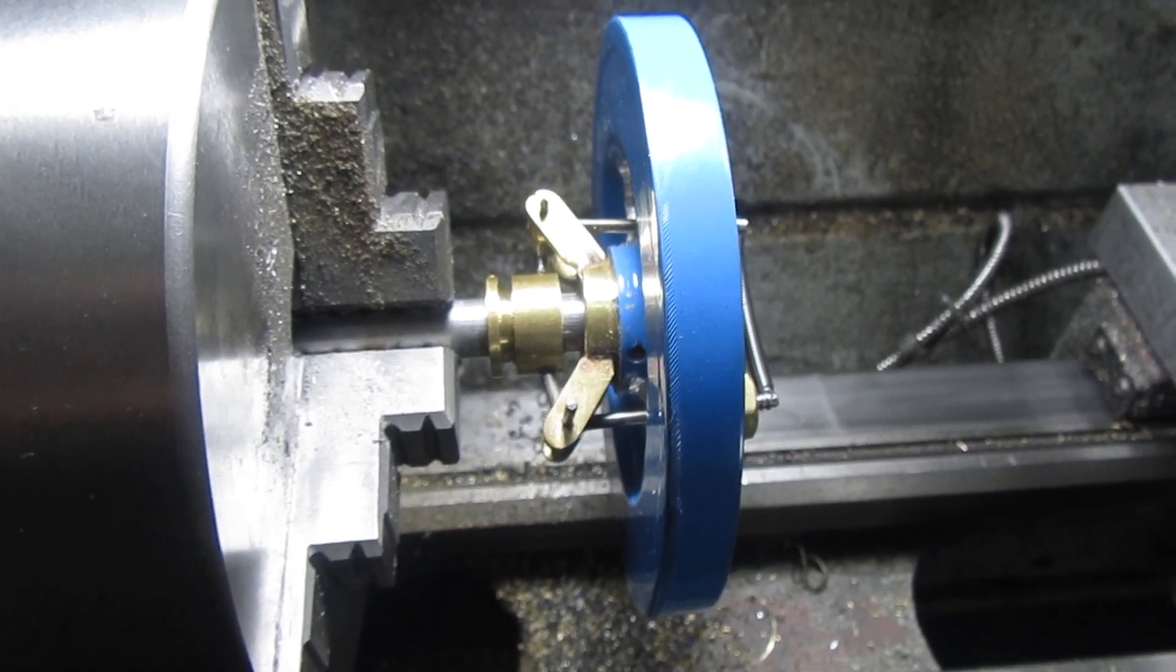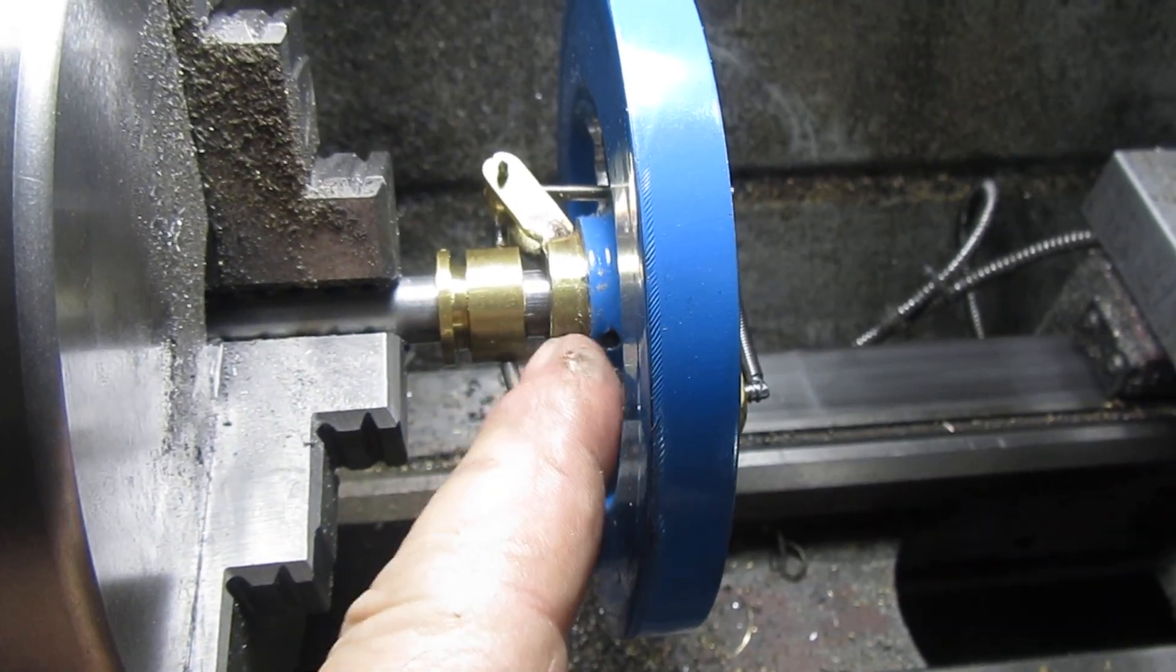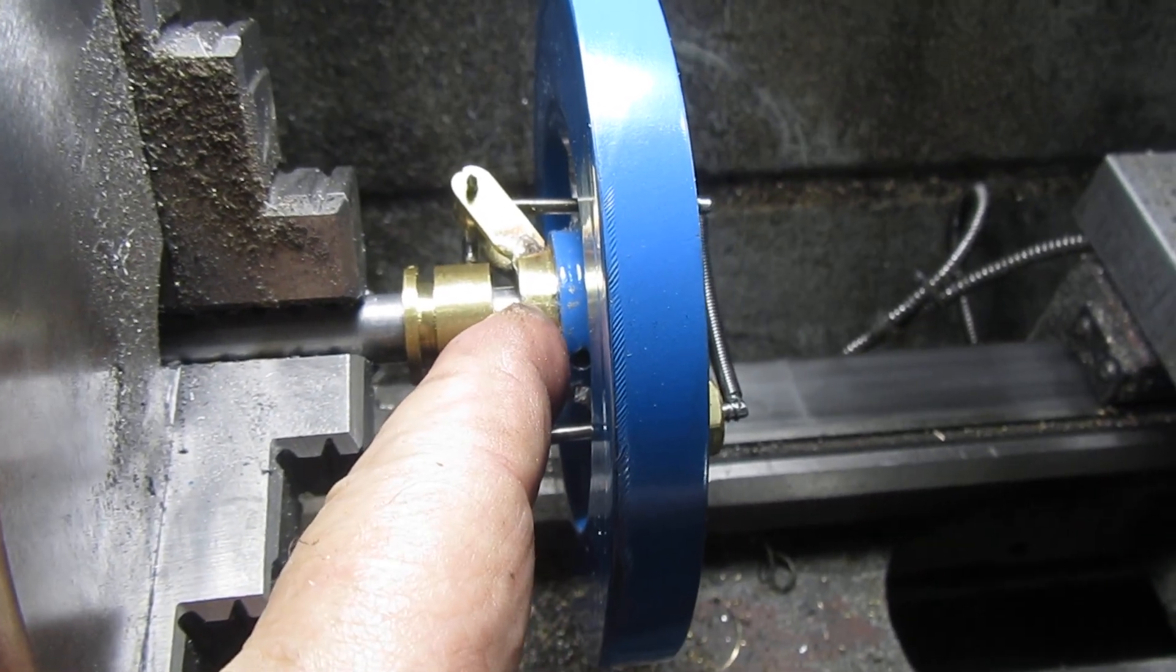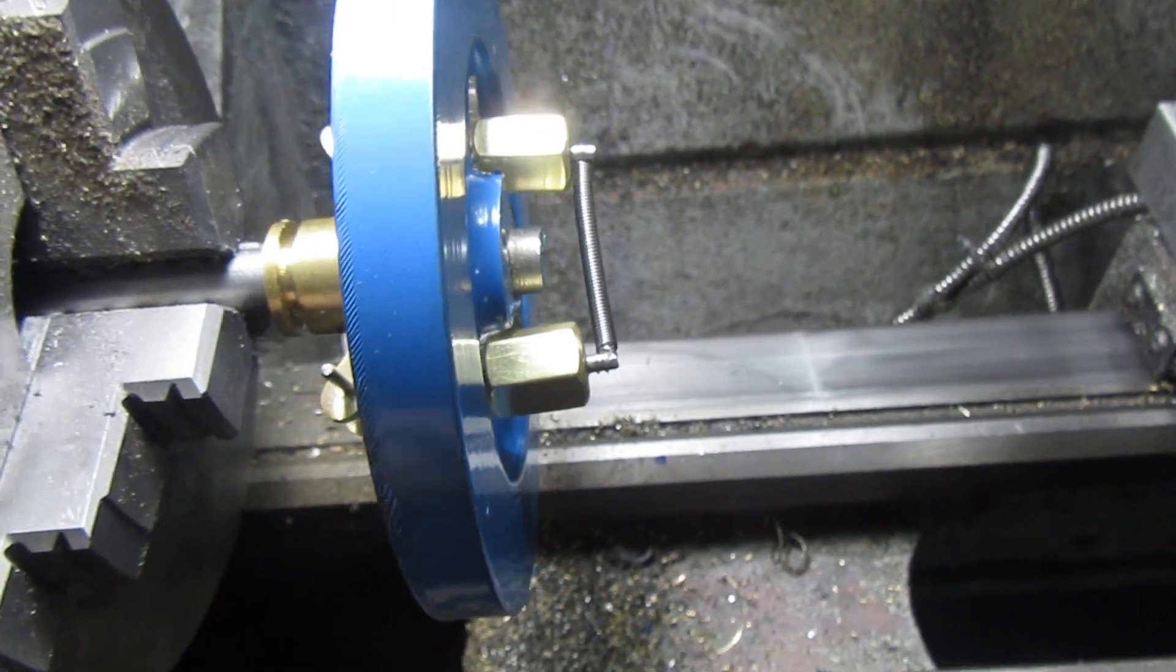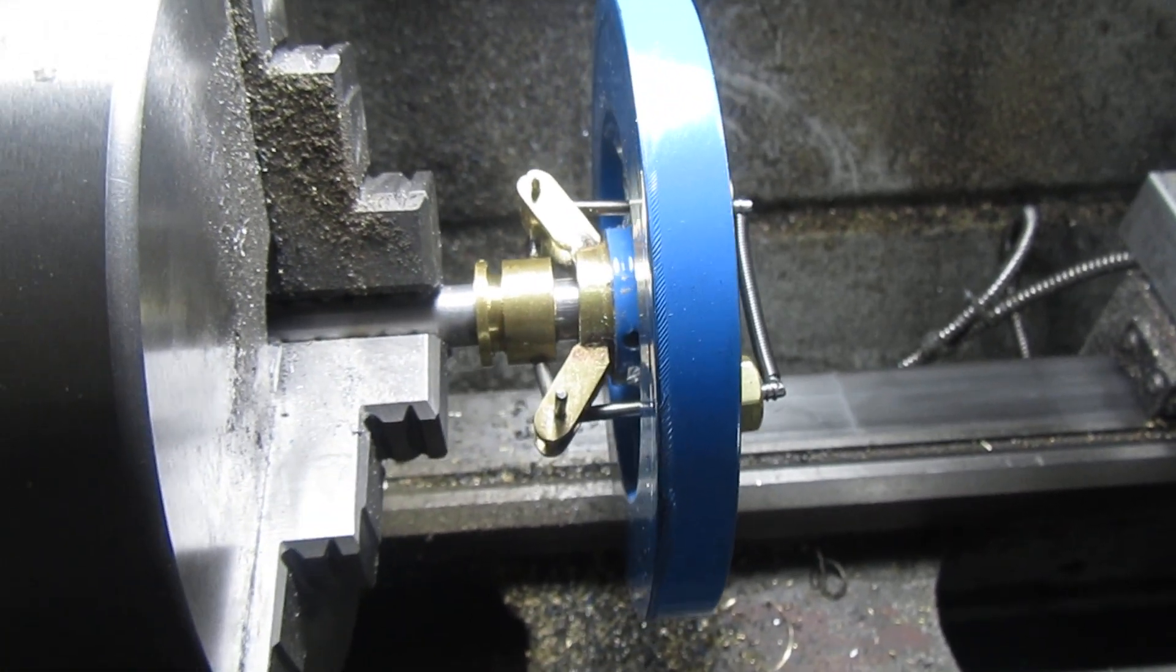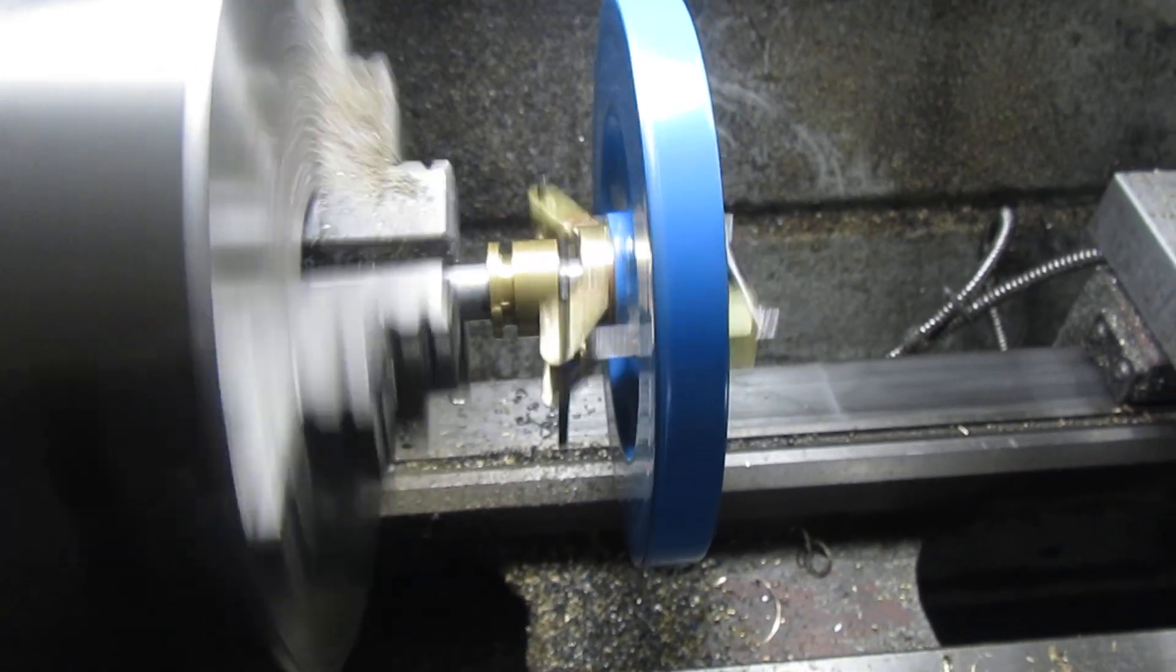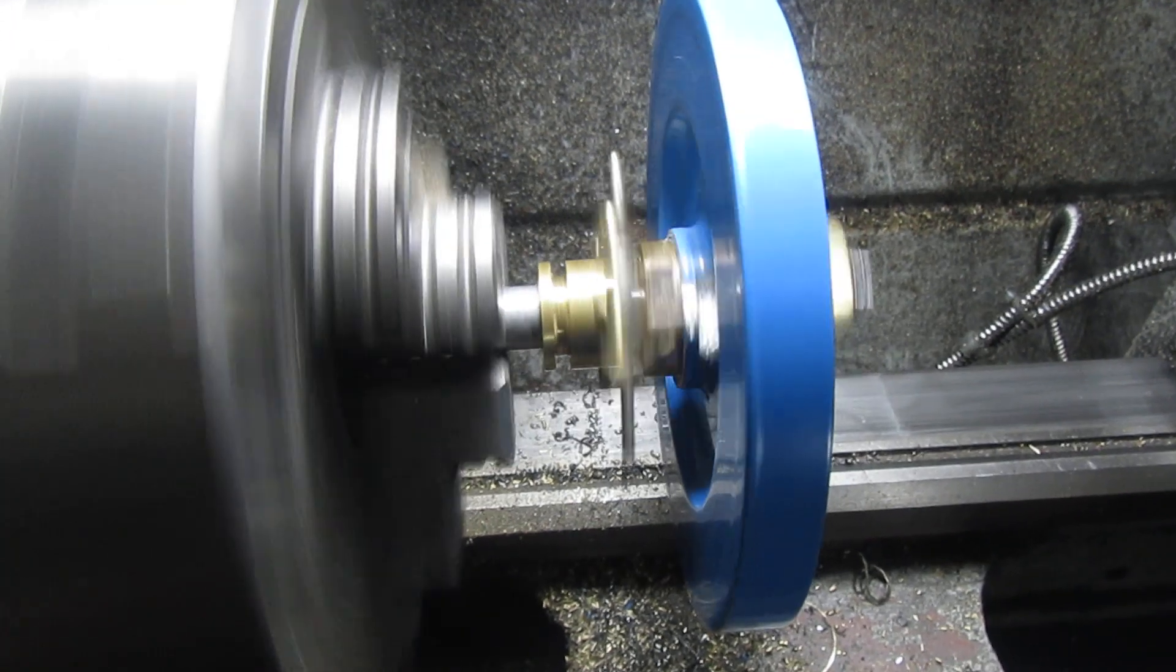So I'm going to start my lathe up, and you're going to watch that gap right there, because that's the easiest place to see it happening. As those weights fly apart from centrifugal force, that gap will change. So we'll start our trusty lathe and watch the gap.